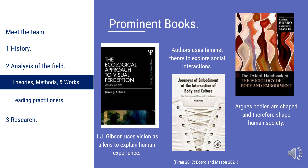Now that we have a background on the theories, theorists, and research methods used for the field, let's look more closely at the prominent works in embodiment. The Ecological Approach to Visual Perception was written by J.J. Gibson, with his theory of embodied cognition at the forefront, using vision as a lens to understand human experiences. The Oxford Handbook of the Sociology of Body and Embodiment lays the groundwork for basic knowledge within the field, arguing that bodies are shaped and therefore shape human society. Last, the book Journeys of Embodiment at the Intersection of Body and Culture takes a feminist approach to explore social interactions.